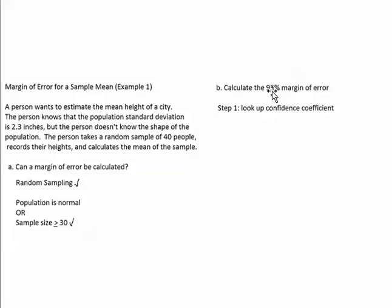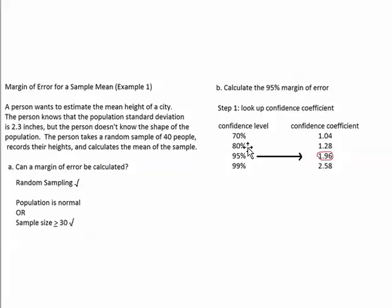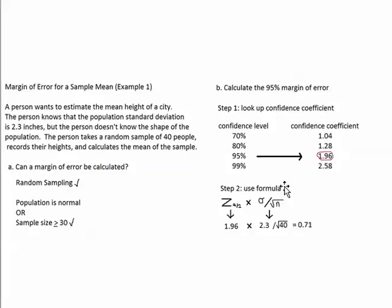The first step is to look up the confidence coefficient. We go to the table, find the 95% row, and get the confidence coefficient — which is 1.96. This table is available online; in this video a custom version is shown on the slide. The next step is to use the formula: the confidence coefficient is 1.96, the population standard deviation is 2.3, and the sample size is 40.